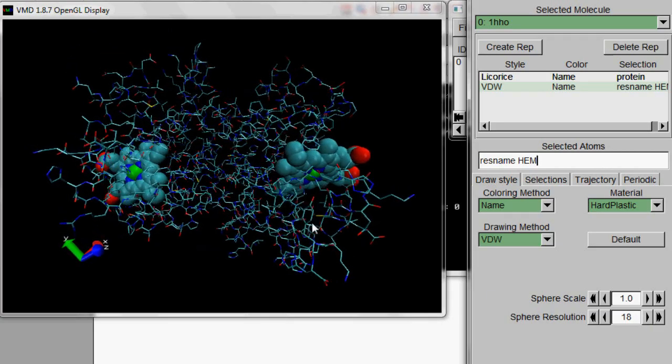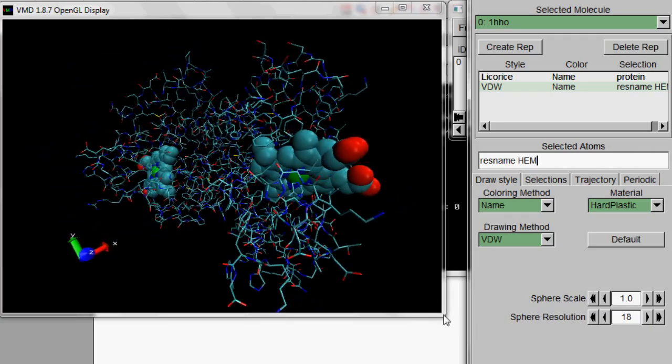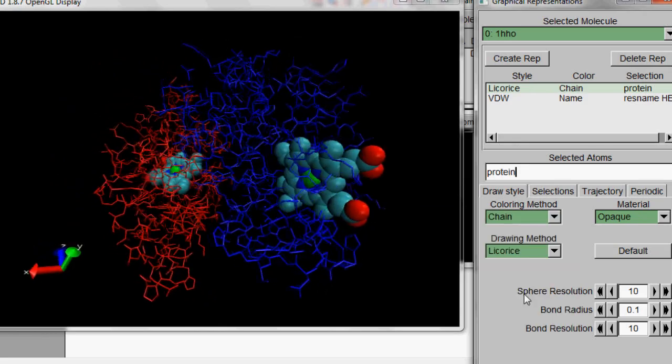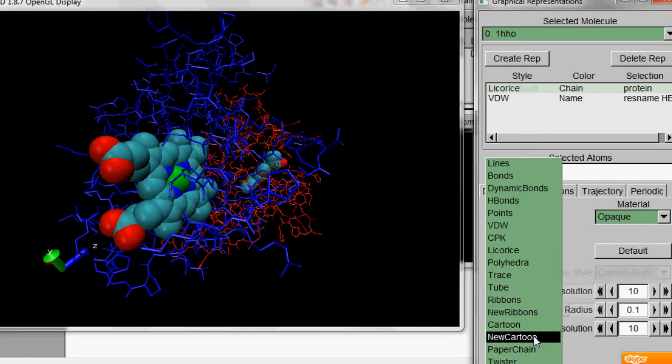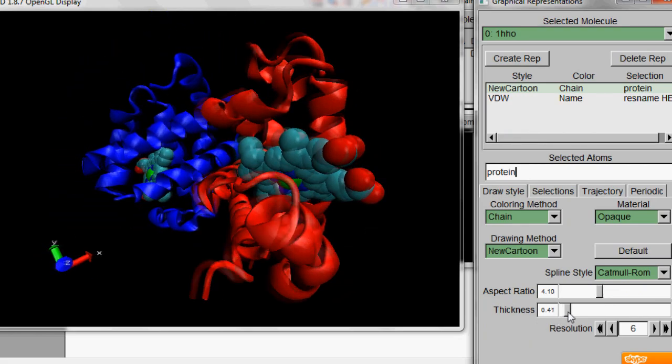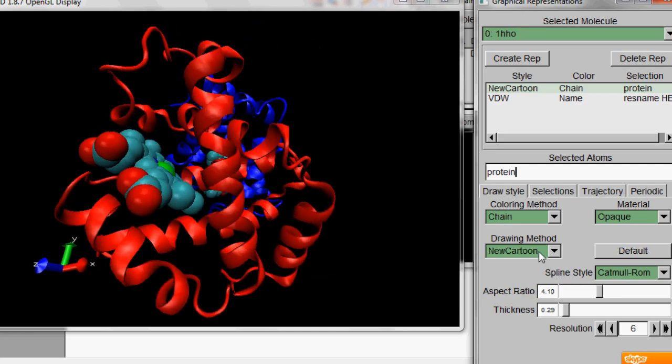Fantastic. So now you can see the heme easily. Let's change the protein representation and change the color method from name to chain. And change the protein representation from lines to new ribbon. Now we can see the protein structure is actually two molecules. Each one with a heme group.